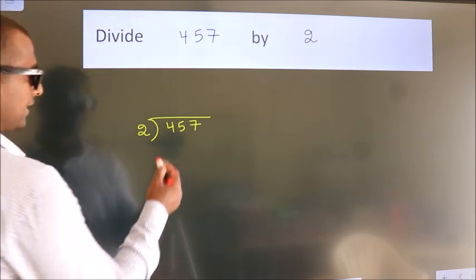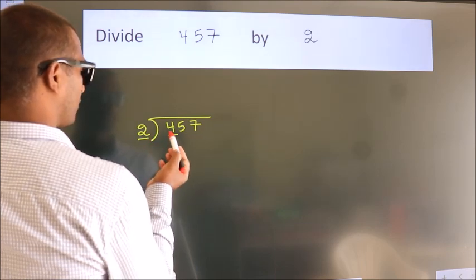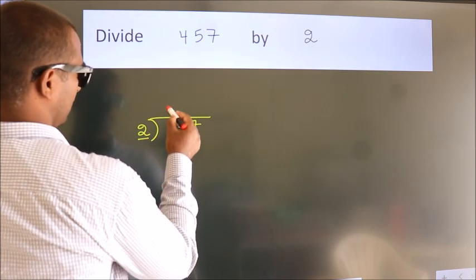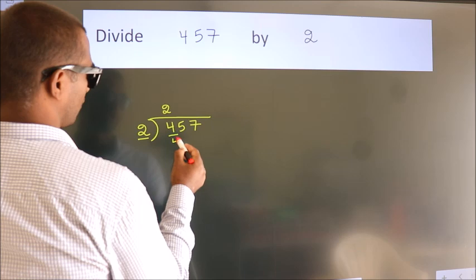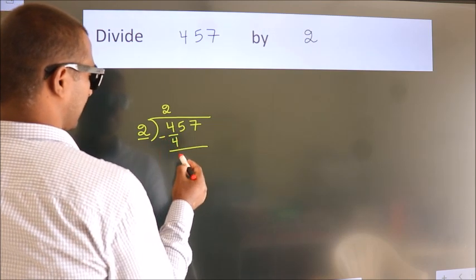Next, here we have 4, here 2. When do we get 4? In 2 table, 2 2s, 4. Now, we should subtract. We get 0.